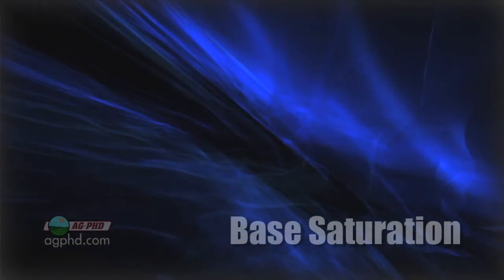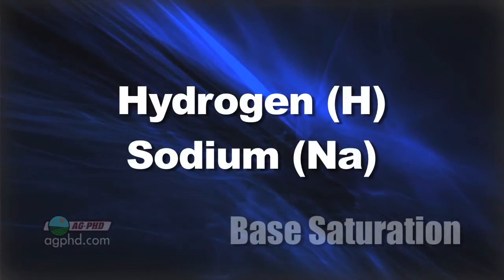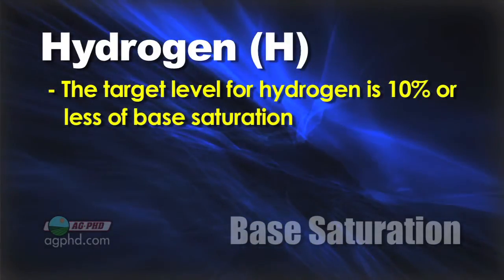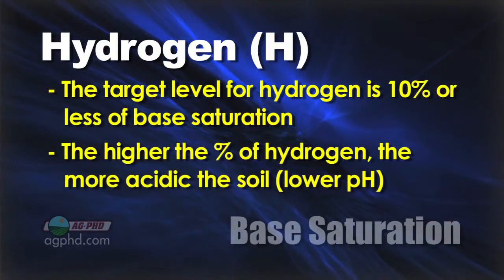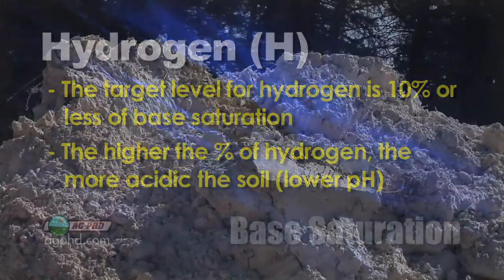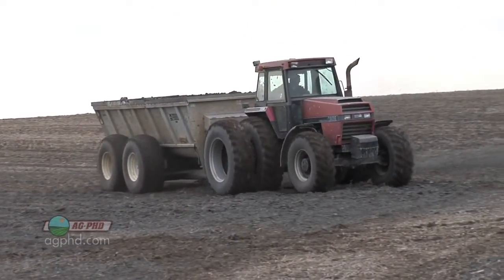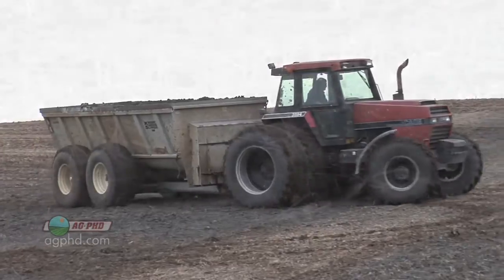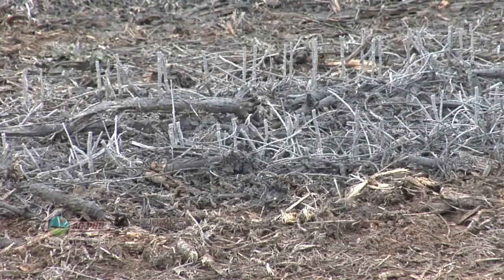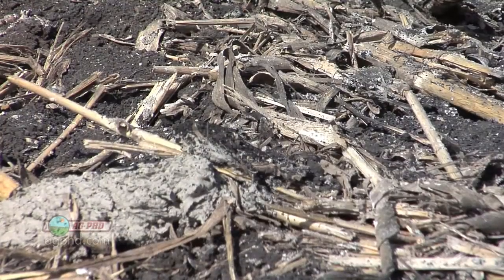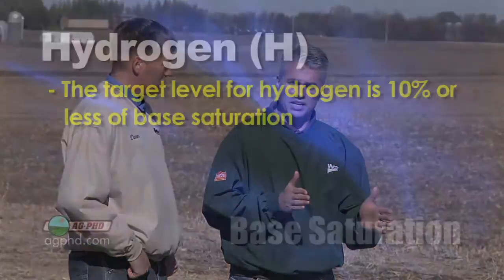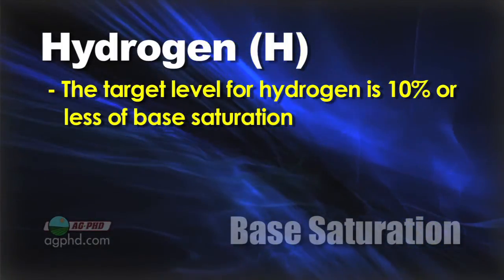The last two factors in base saturation we want both low: hydrogen and sodium. With hydrogen we'd like that to be 10 percent or less. When you start getting up around 10 percent hydrogen, that's telling you that you have an acid soil with a low pH. When you apply lime — calcium carbonate — the chemical reaction in a low-pH acid soil creates more free calcium and hydrogen goes away. So you'll see hydrogen go down, soil pH go up, and calcium go up. When hydrogen base saturation exceeds 10 percent, that usually means soil pH is around 6.3 or less, and that's when you want to start applying lime.